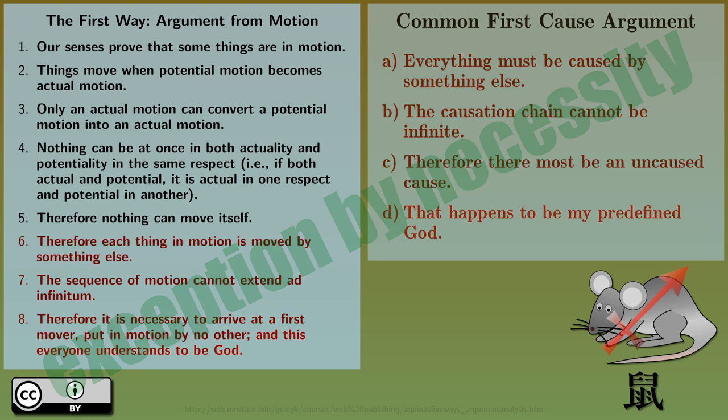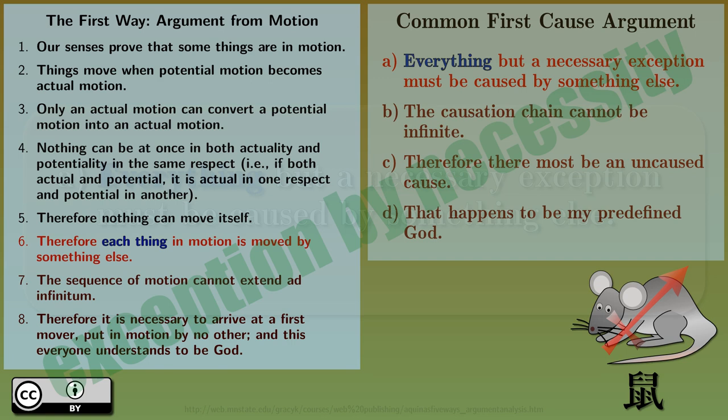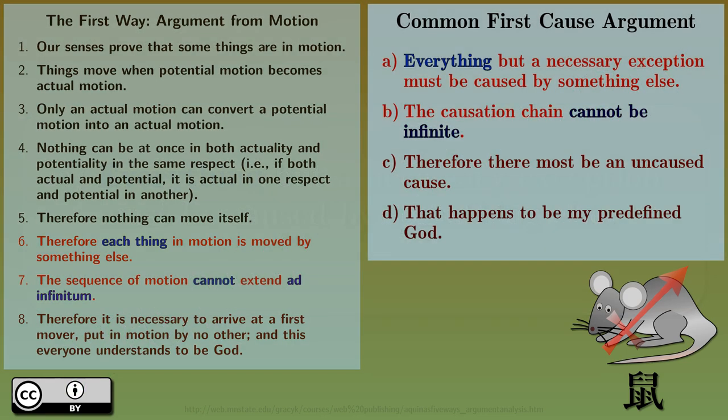That requires an exception to the first premise by necessity of the second premise. If you have already decided that the exception is God, that is special pleading. The first premise should treat everything but a necessary exception. But then, why only one exception? Why not two exceptions? Or three? Or a hundred? Or infinite exceptions? The absoluteness of everything is necessarily negated by the impossibility of an infinite regression.